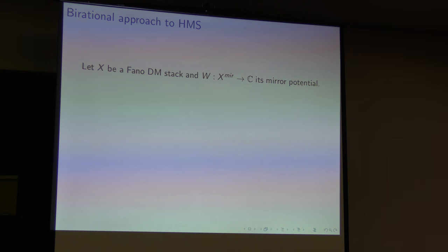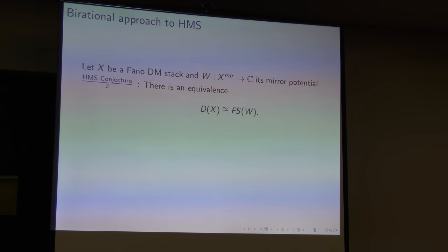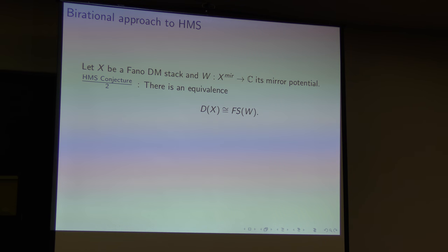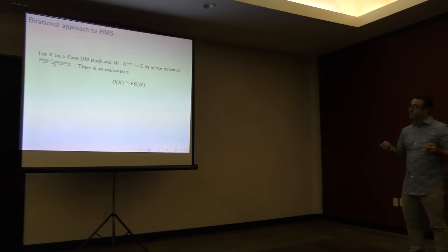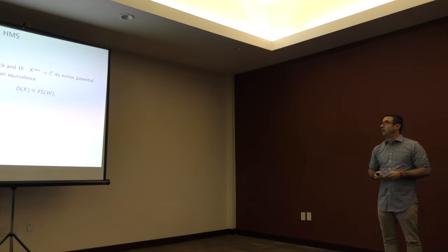What kind of version of Homological Mirror Symmetry am I thinking about? I'm going to be thinking about the case where I have a Deligne-Mumford stack X, and then I have some mirror potential, which is going to be some holomorphic function W on a mirror manifold to ℂ. The particular version of Homological Mirror Symmetry I'm looking at is an equivalence between two triangulated categories, or derived categories. One is the derived category of coherent sheaves on X, on the left-hand side, and the other is known as the Fukaya-Seidel category of this function W. This function W will be some Lefschetz fibration on the mirror manifold.